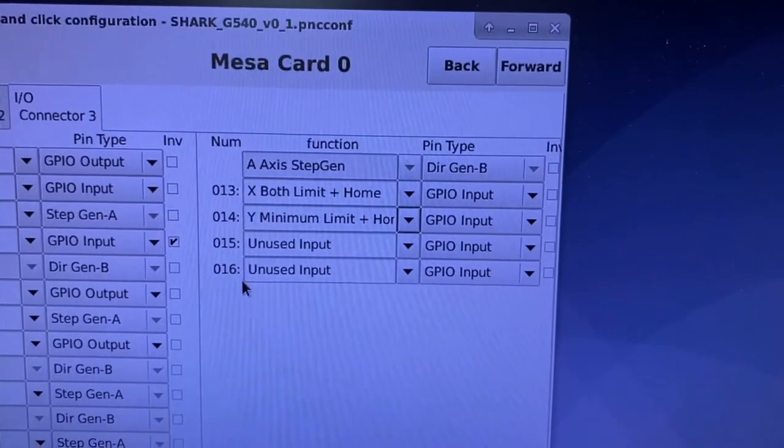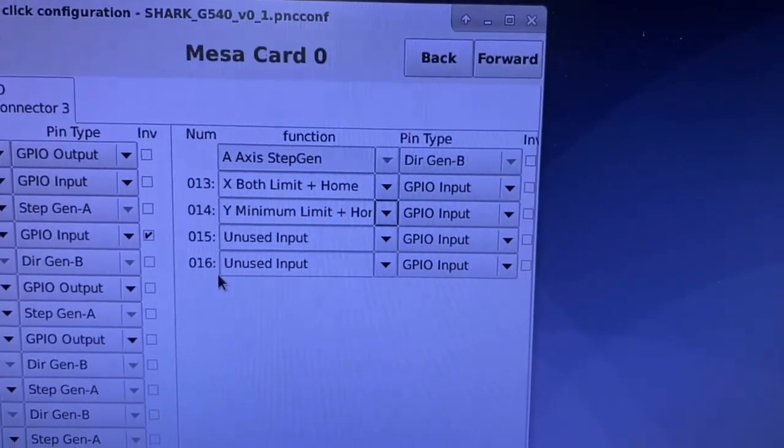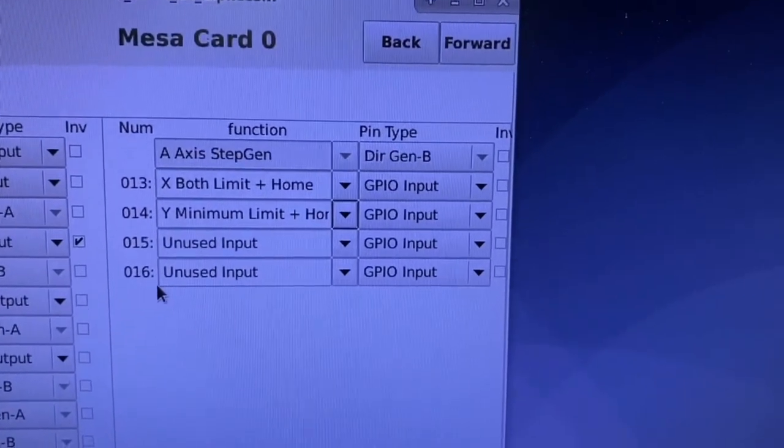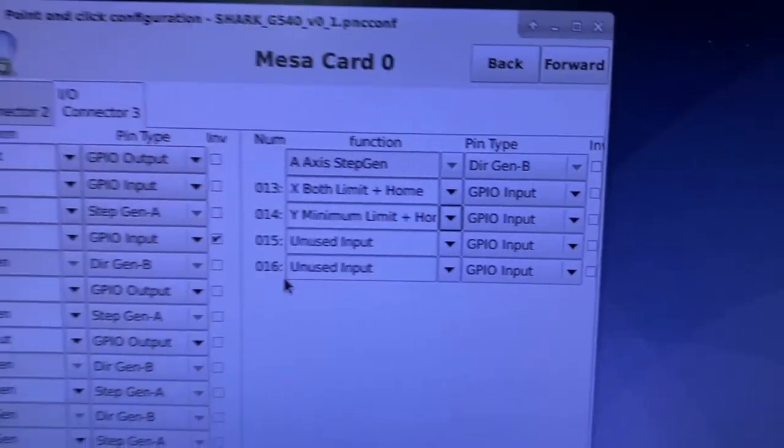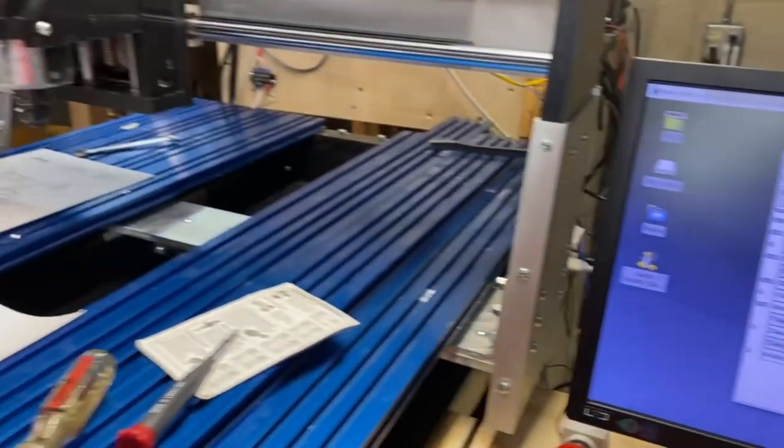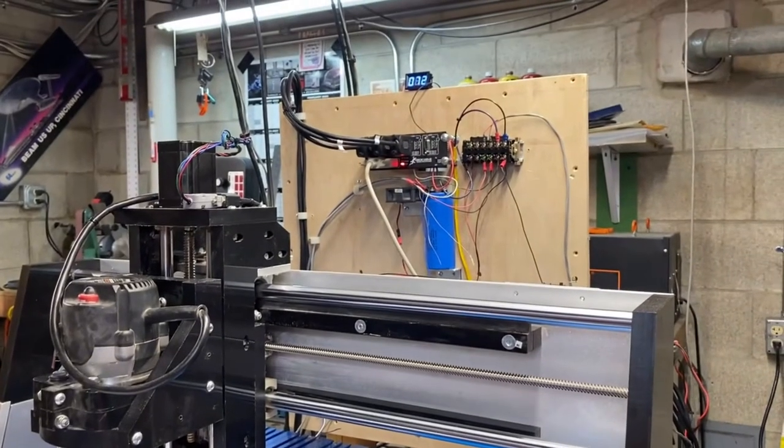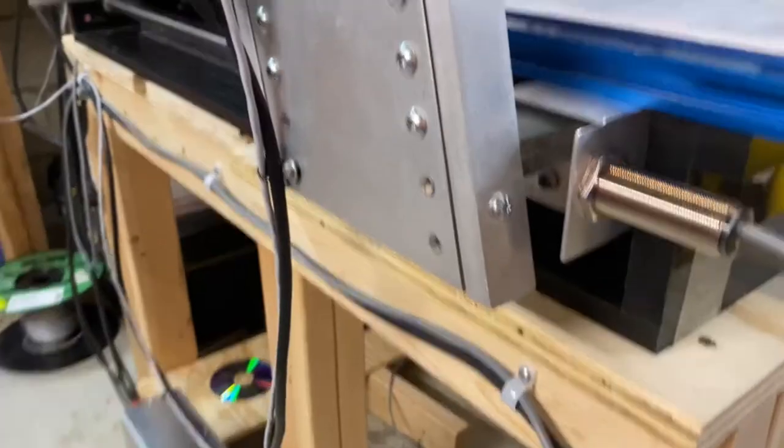This sensor is going to be the y-axis minimum plus the homing switch. So I make that selection and that sensor is configured. Now you may ask why didn't we put two sensors in series, two switches in series, like we did with the x-axis. The circuitry in these inductive limit switches is sophisticated enough that I actually prefer just to put them on two separate inputs. So we're going to use a separate input for the y-axis maximum switch.